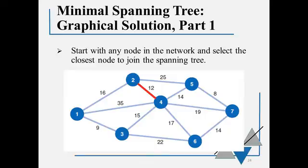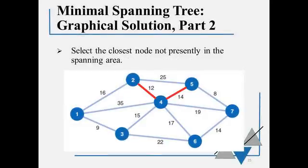At node 4, we have the numbers coming off 14, 19, 17, 15, 35. I also want to keep looking at node 2. It's part of the network. So I have 16 and 25. The smallest number among all of those is the branch from 4 to 5 at 14. So 5 comes into my minimal spanning tree. The next smallest number that's actually connected to that minimal spanning tree is 8. So 8 is the next number I add. Node 7 comes into my minimal spanning tree.